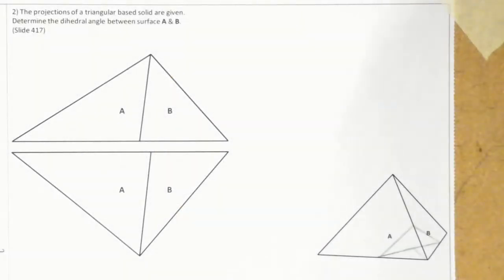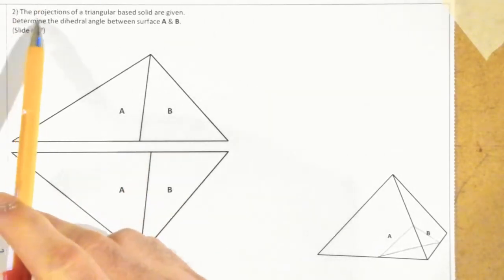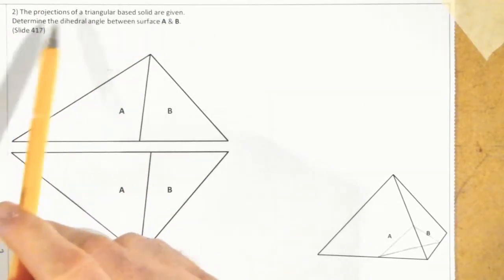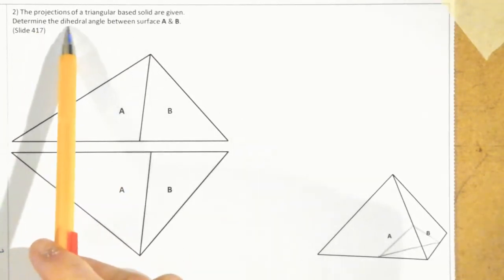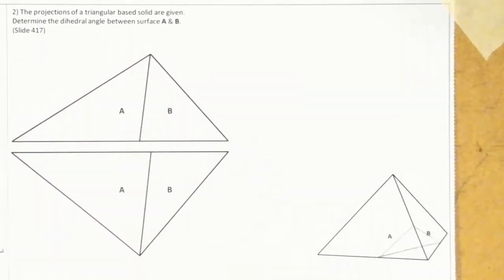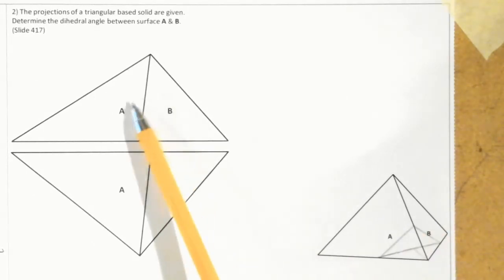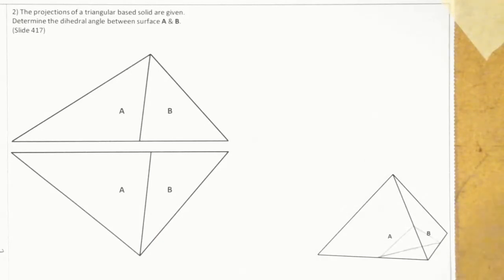Hi folks. The question we have today is based on surface geometry, specifically the area of dihedral angles. The question says the projections of a triangular base solid are given, and we need to determine the dihedral angle between surface A and B. We can see the pictorial view, the elevation, and the plan view. What we have to do is get the dihedral angle between surfaces A and B.